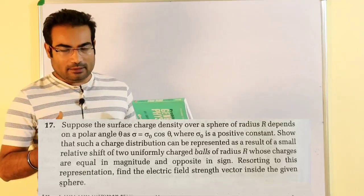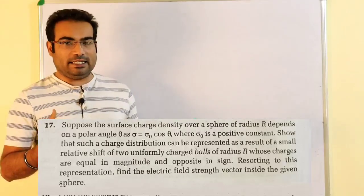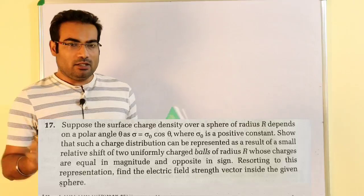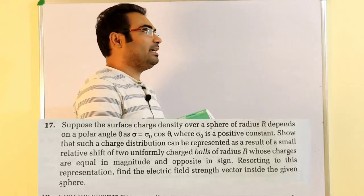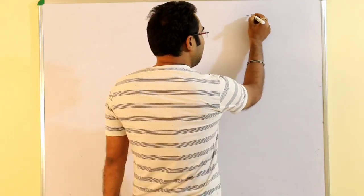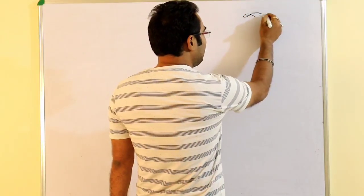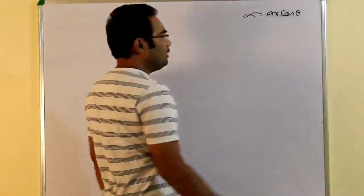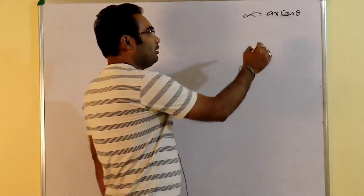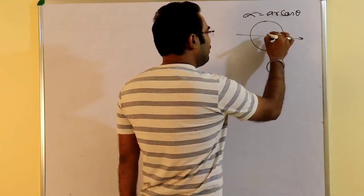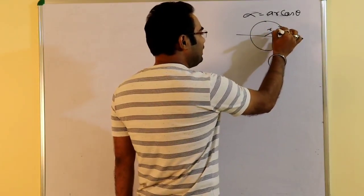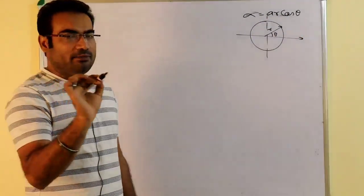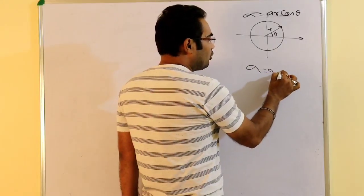Question number 16 and question number 17 are related. In question number 16, the surface charge density sigma was given as AR cos theta. In question number 17, sigma is sigma naught cos theta — meaning in place of AR, sigma naught has appeared. So the answer of question number 16 will become the answer of question number 17, with AR replaced by sigma naught.